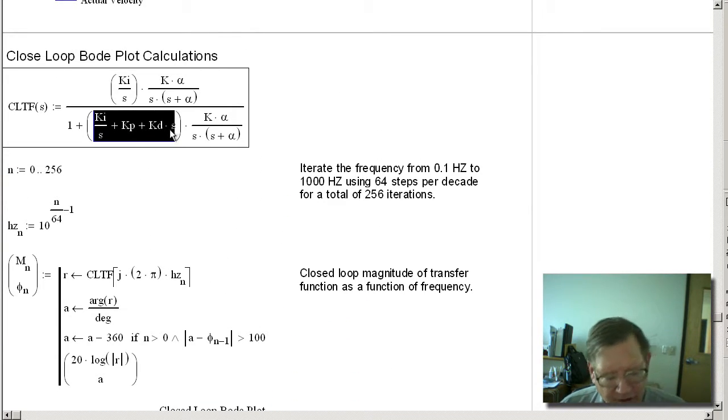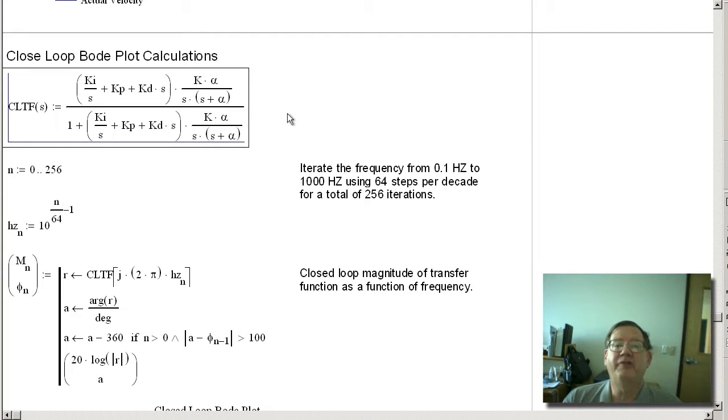So there's different options that you have with a PID. You can have all three gains be in the forward path. In other words, they're acting on the error. If you remove Kd from the forward path, that means that the derivative gain is only acting on the changes in position, or what people call the process variable. And if you remove Kp and Kd from the forward path, then the Kp and Kd are only acting on changes in the process variable or the position, and only the integrator is working on the error. I call this mode where the Kp and Kd are removed from the forward path, I minus Pd, and it has some uses in motion control.